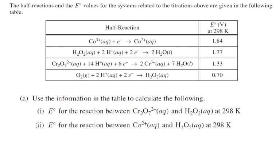Now use the information in the table to calculate the following. The E° for the reaction between chromate and peroxide, and the E° for the reaction between cobalt and peroxide, both at 298 K. Now looking at this, this is a lot of information. So what I do is say, well first off, I want to do chromate and I want to mix it up with peroxide.